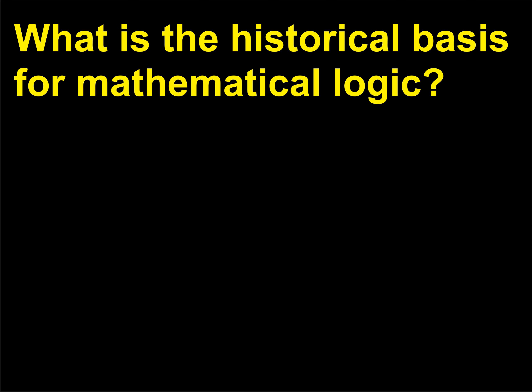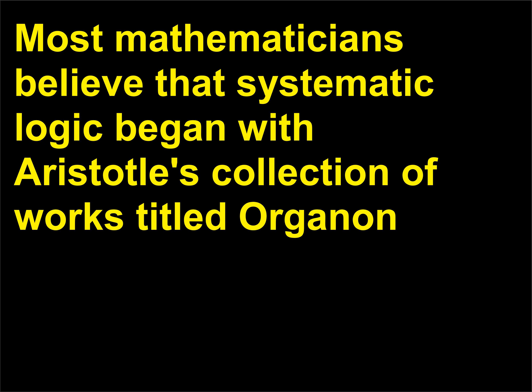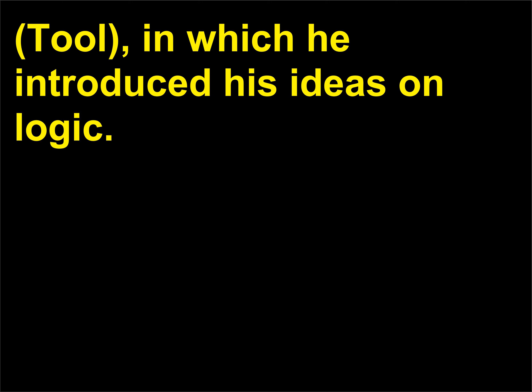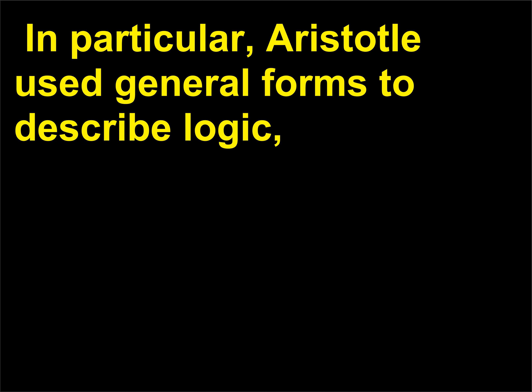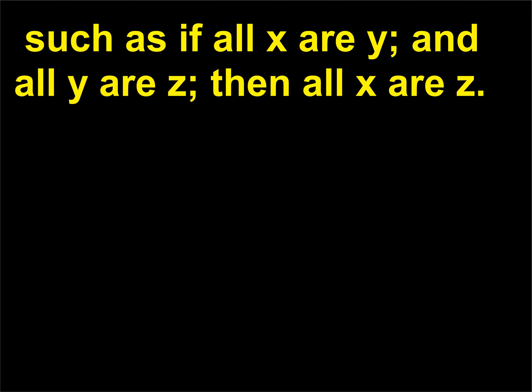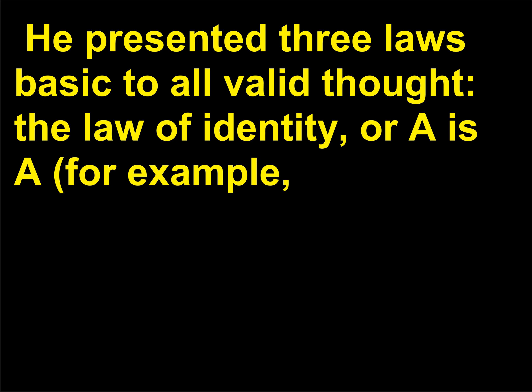What is the historical basis for mathematical logic? Most mathematicians believe that systematic logic began with Aristotle's collection of works titled Organon (Tool), in which he introduced his ideas on logic. In particular, Aristotle used general forms to describe logic, such as 'if all X are Y, and all Y are Z, then all X are Z.' He presented three laws basic to all valid thought.